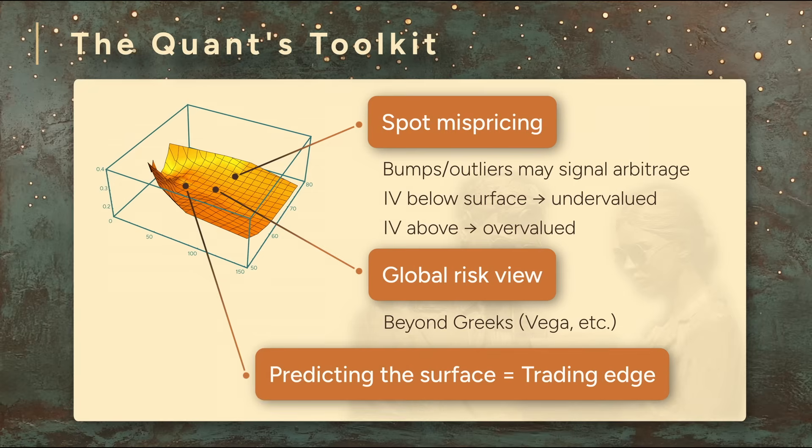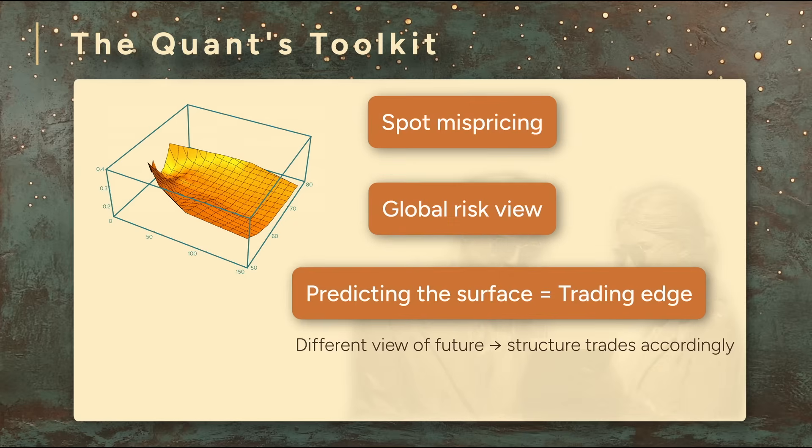And significantly, if you can predict the surface, this gives you an edge. If you have a different view of future volatility than what the market's implying, you can structure trades around that view. Essentially, you're using the volatility surface to find and act on opportunities that others might not see.